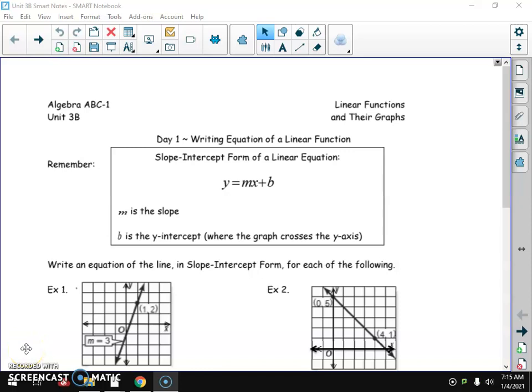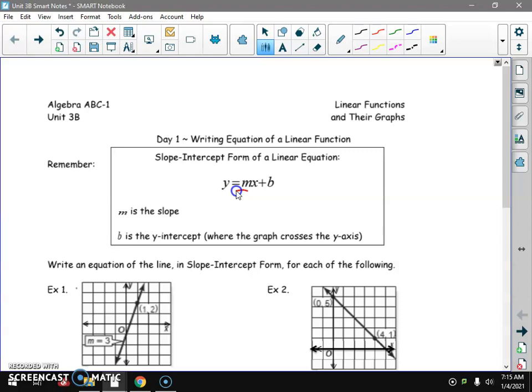Good morning, algebra classes. We're going to start day one of unit 3D, writing linear functions. Last unit we graphed them from the equation. This unit we're going to go from the graph back to the equation. And if you remember, what we needed was two pieces. We need the M number and we need the B number.